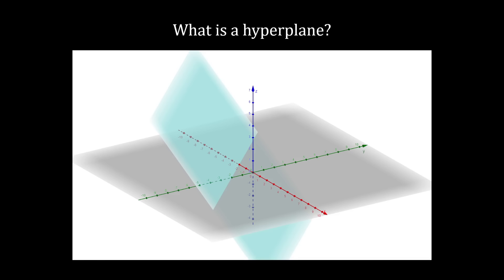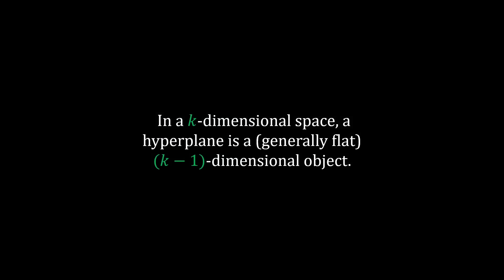You might be asking yourself, what is a hyperplane? Well, look at a plane in three-dimensional space. It's just a flat, two-dimensional surface. So in three dimensions, a plane is a flat, three-minus-one-dimensional object. The natural generalization of this is that a hyperplane is a flat object of one dimension less than the space it inhabits.